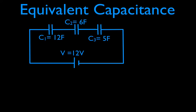This is the circuit we're going to use. We have a 12 volt supply, and we have capacitor number 1, capacitor number 2, and capacitor number 3 — a 12 farad, a 6 farad, and a 5 farad capacitor. You can see they're all lined up in a row here, and that means they are in series.